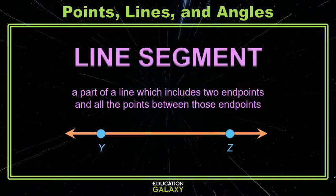When we're identifying two endpoints and all of the space — all of the points in between — we call that a line segment. Here you can see the line segment YZ.